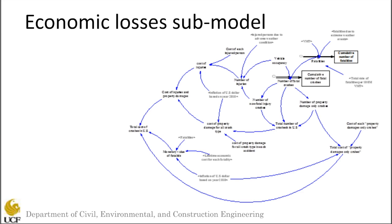The first sub-model is the economic losses sub-model with respect to fatalities, injuries, and property damage only. This sub-model uses the total fatalities, injuries, and property damages and estimates the total economic cost for all types of crashes. We use data from NHTSA to calculate many of the numbers based on this model.